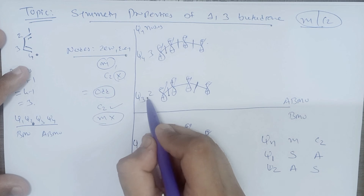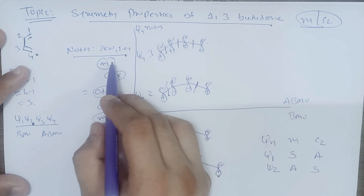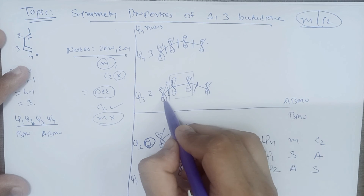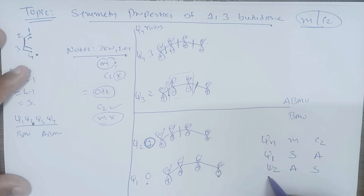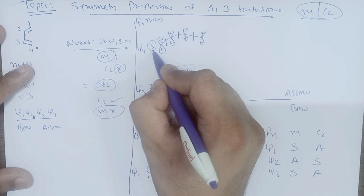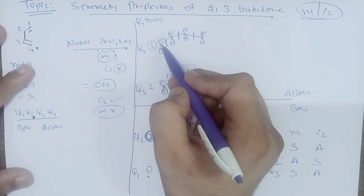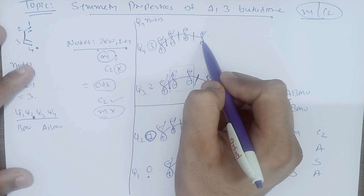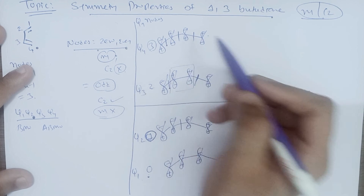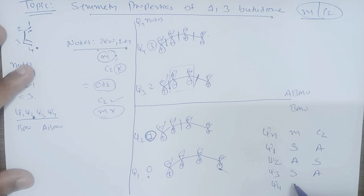Similarly, psi 3 is having an even number of nodes, so it should have a mirror plane. If we place the mirror plane, the minus sign reflects as minus and the plus sign reflects as plus. So psi 3 has a mirror plane and does not have a C2 axis. For psi 4, we have 3 nodes which is an odd number. Checking: minus, plus on one end and plus, minus on the other — rotating by 180 degrees confirms psi 4 has a C2 axis and does not have a mirror plane.